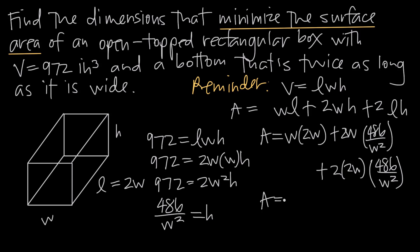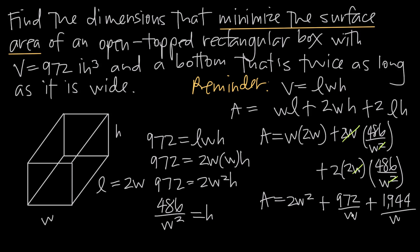Simplifying: W times 2W gives 2W². Then 2 times 486 is 972, and one W cancels from W², leaving 972/W. For the last term, 2 times 2 times 486 is 1944, with W canceling similarly to give 1944/W. Combining the two terms with W in the denominator: A = 2W² + 2916/W.